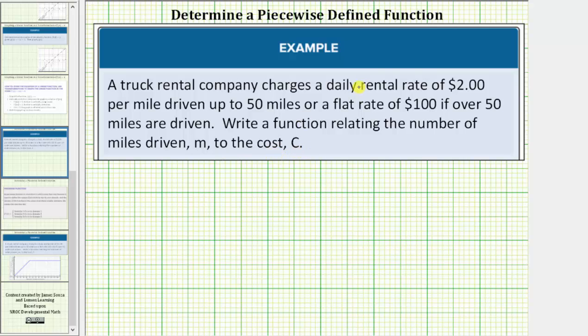In this case, because there are two rules or two formulas to determine the cost, our function c of m will be a piecewise defined function or a piecewise function.